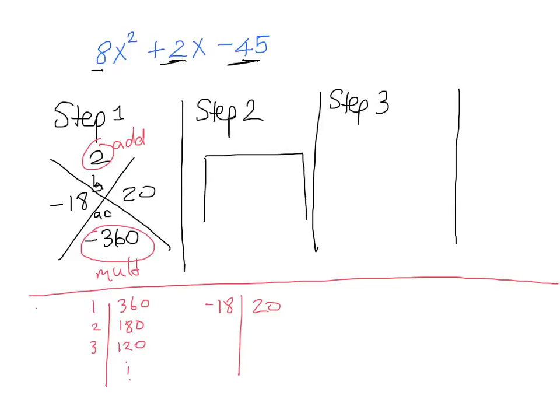In our box again we have four spaces. The top should have A, the bottom should have C, so that's 8 and negative 45, and our two numbers that go in the top right and bottom left are negative 18 and positive 20. Now we can fill in the sides of our box. The greatest common factor of our top row is 2. 2 into 8 we get 4 and 2 into negative 18 we get negative 9. 4 into 20 gives us 5 and now we're ready for our answer.